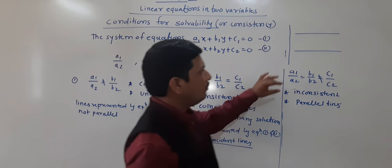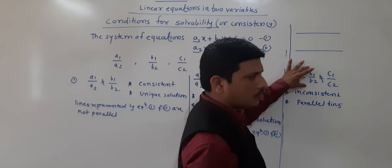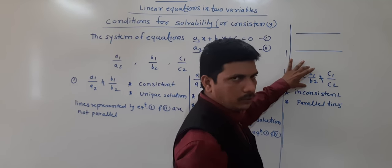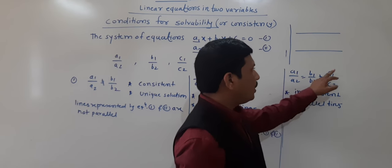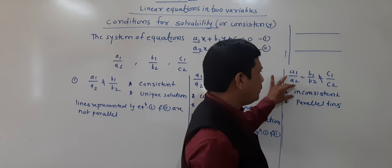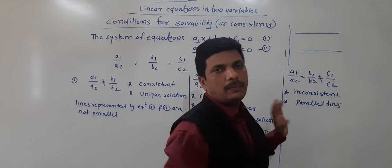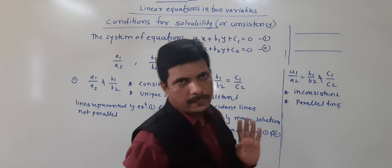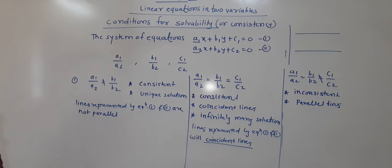In the third condition, when a1/a2 = b1/b2 but not equal to c1/c2, the two ratios are equal but not the third — this is inconsistent and the lines are parallel.